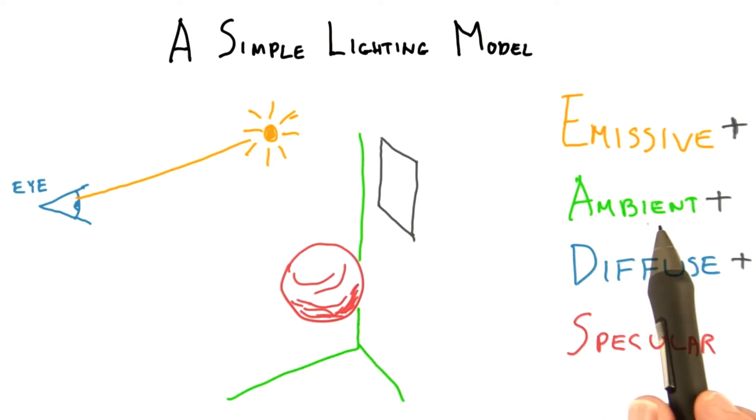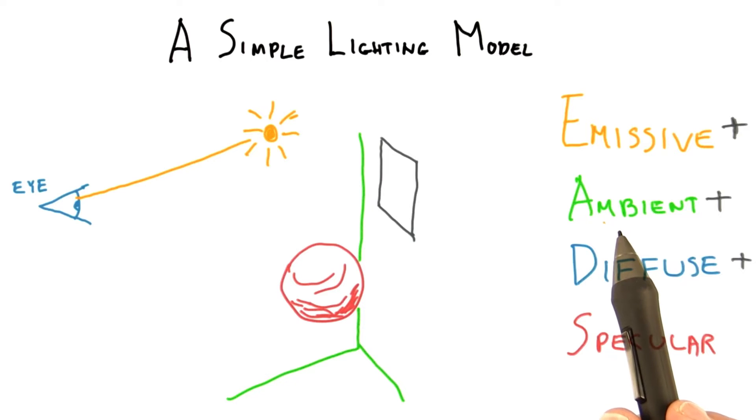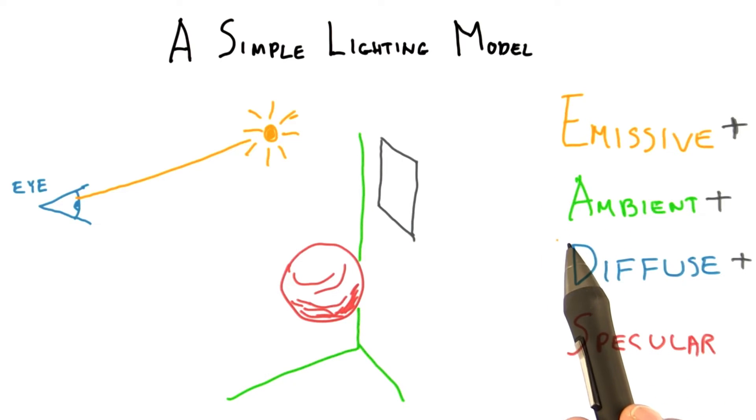The emissive and ambient terms are kept separate as they fulfill different functions and often have different controls. For example, 3JS allows you to set an ambient light that affects all materials with an ambient term.